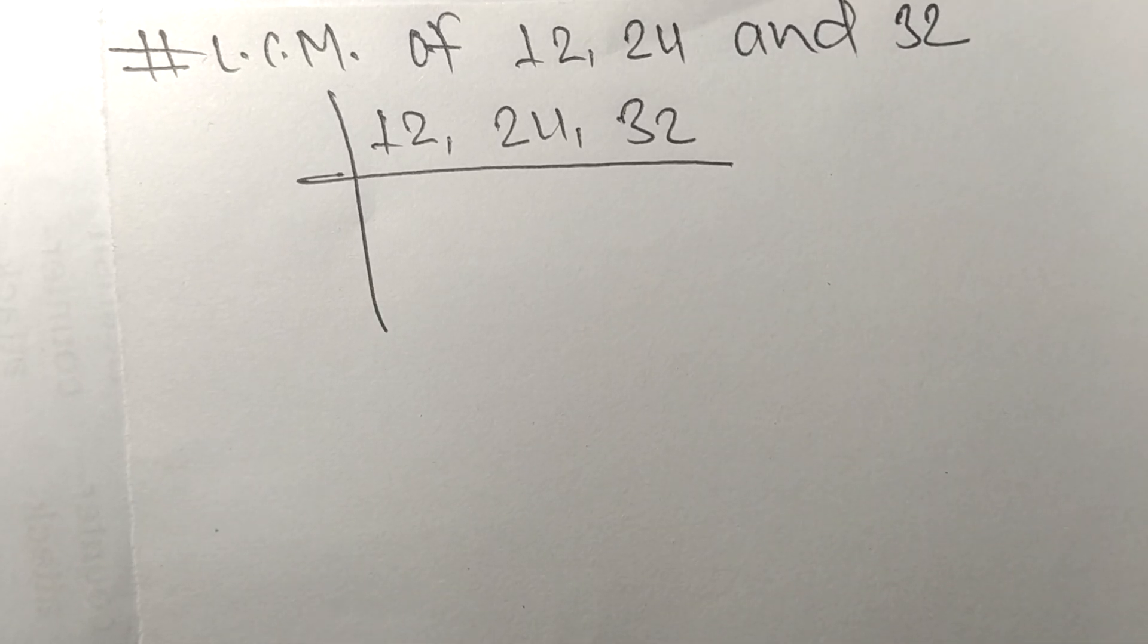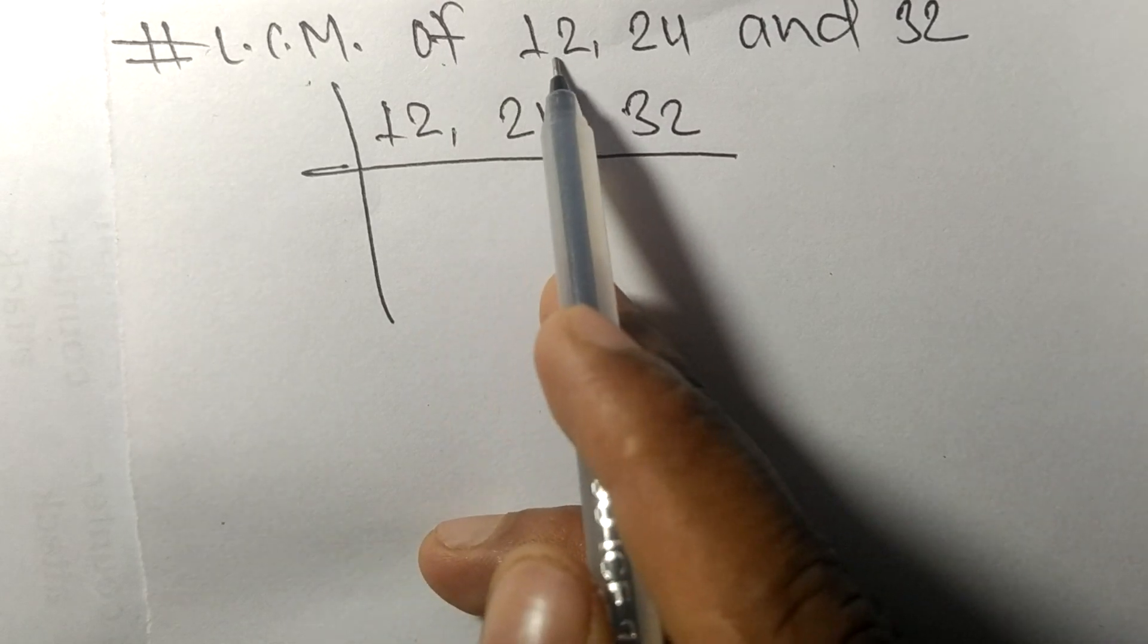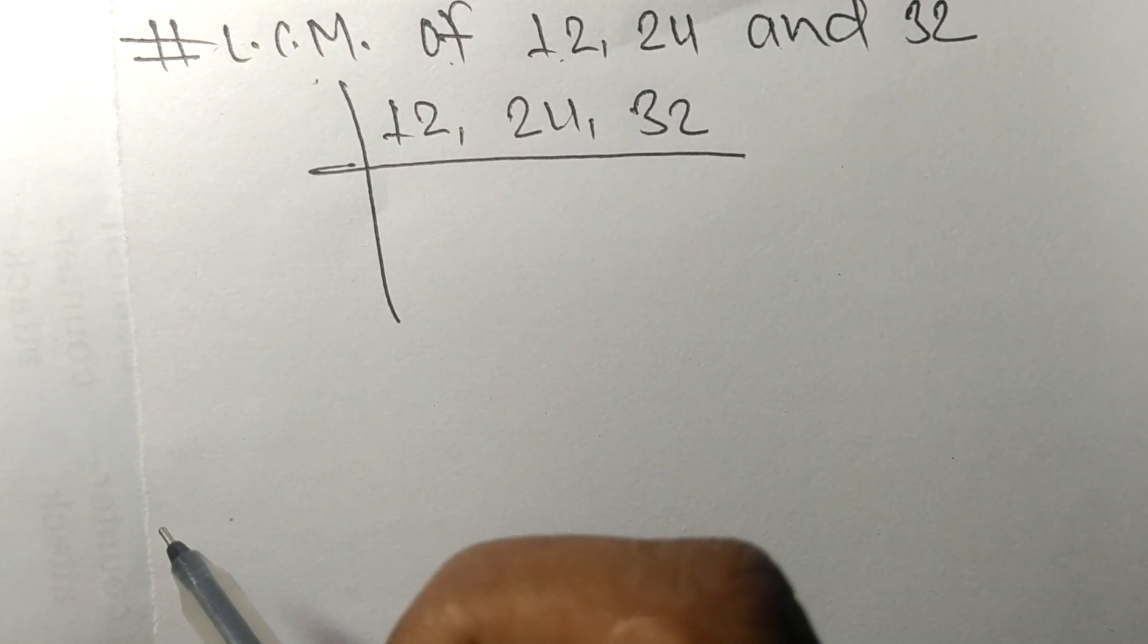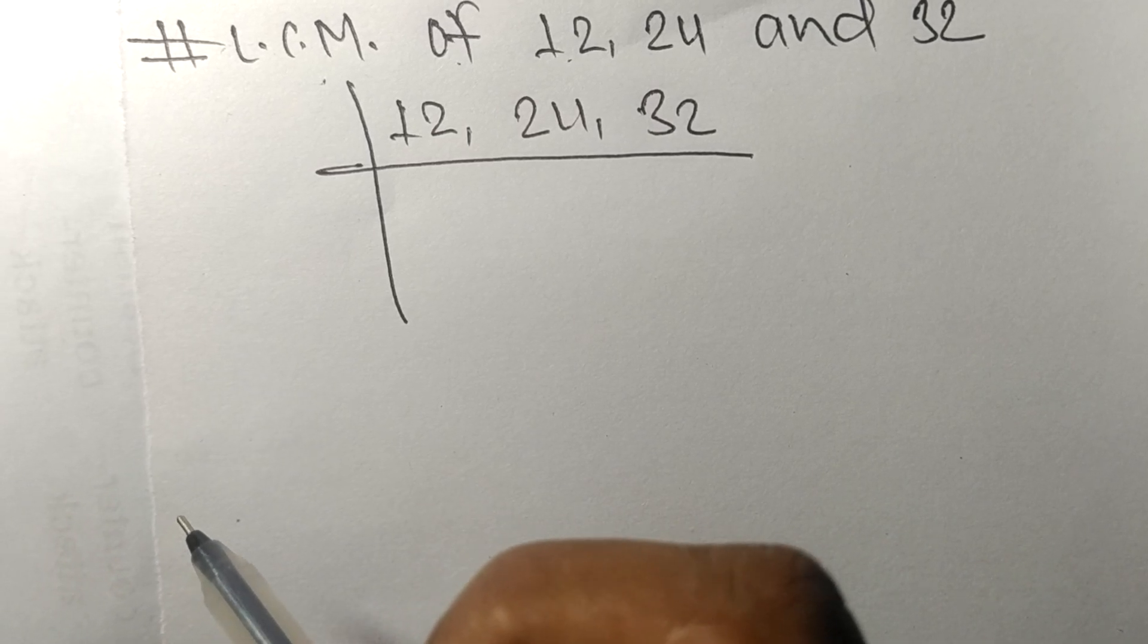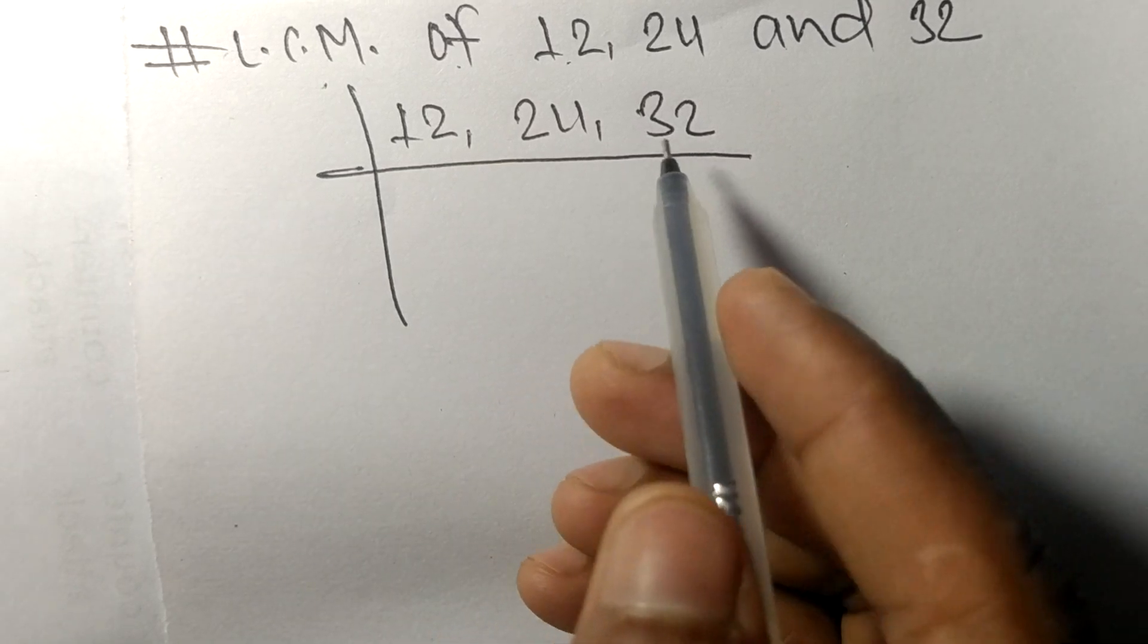So today in this video we shall learn to find the LCM of 12, 24, and 32. To find LCM we have to choose the lowest number that can exactly divide at least any two of these numbers.